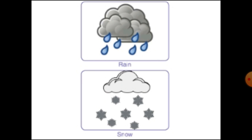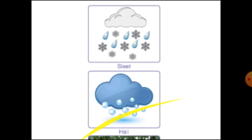Rain is the most common form of precipitation. It occurs when liquid water falls on earth. Snow is the precipitation in the form of solid frozen water. Sleet is a mixture of snow and rain. Hail is a solid precipitation in the form of balls or pieces of ice known as hailstones. Precipitation is measured by using a rain gauge.